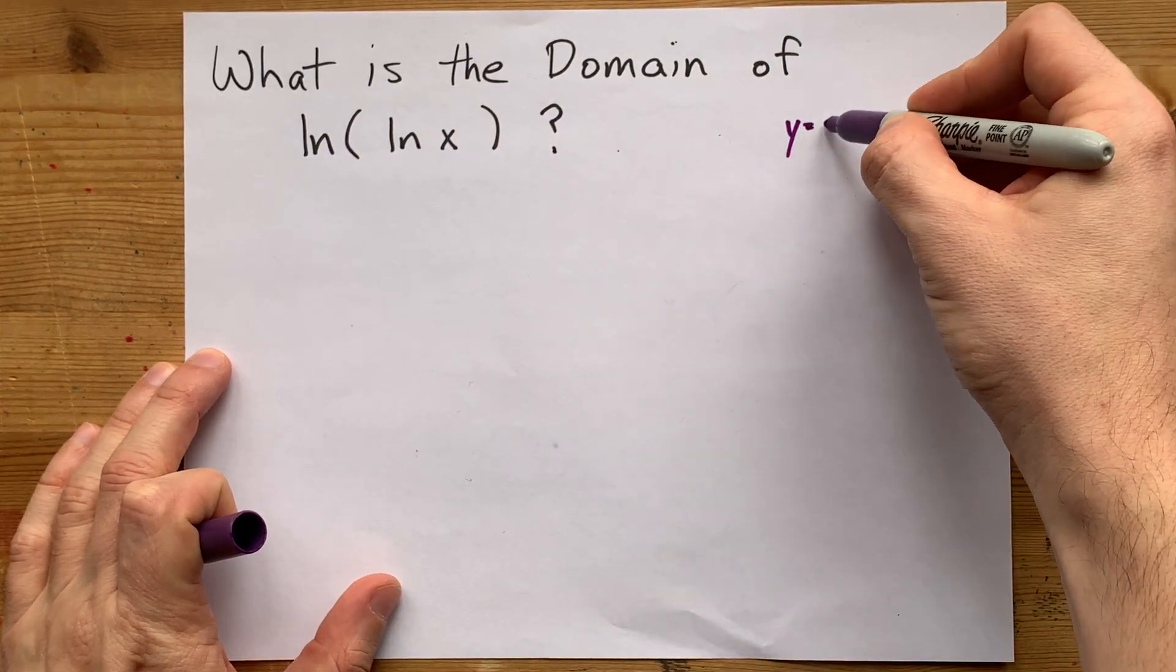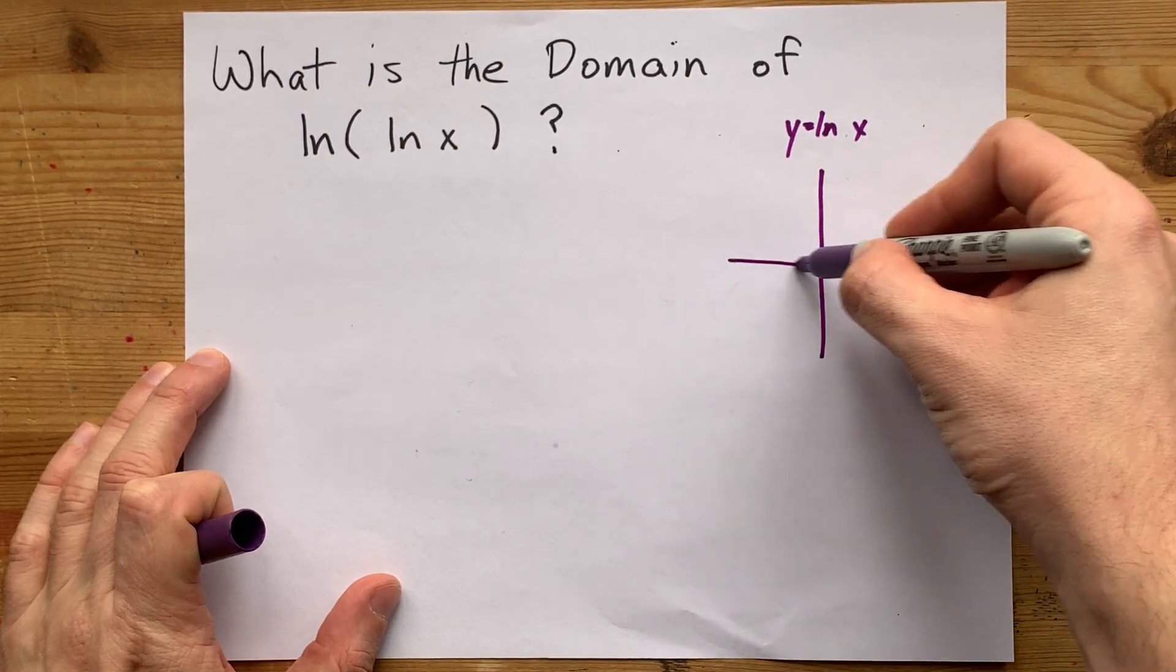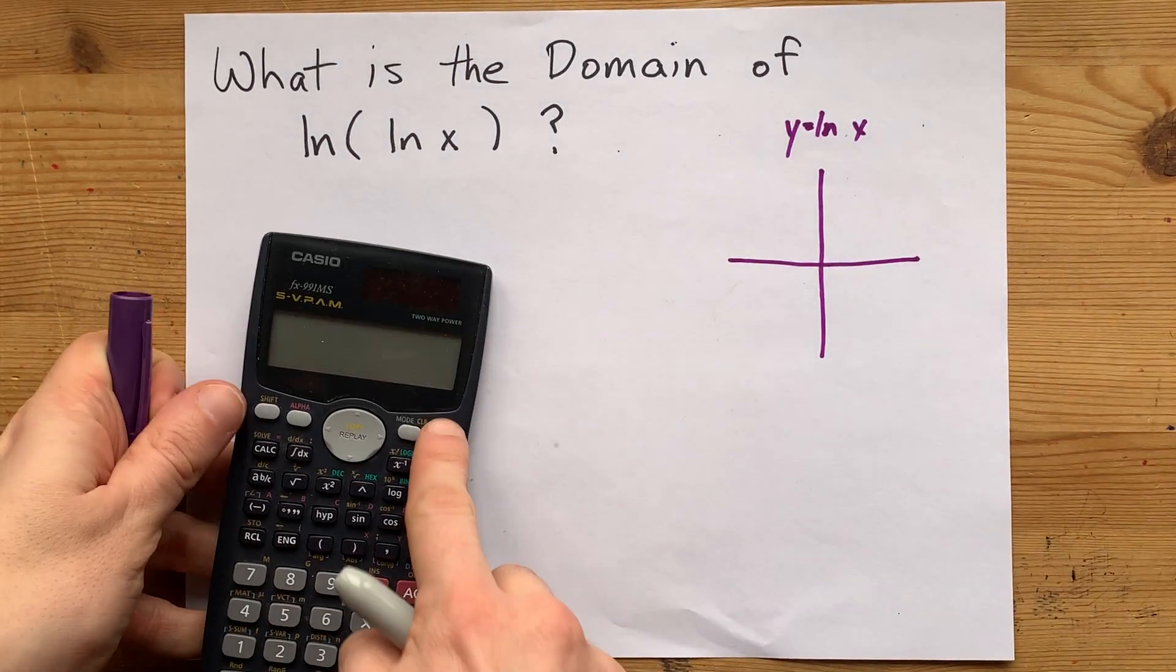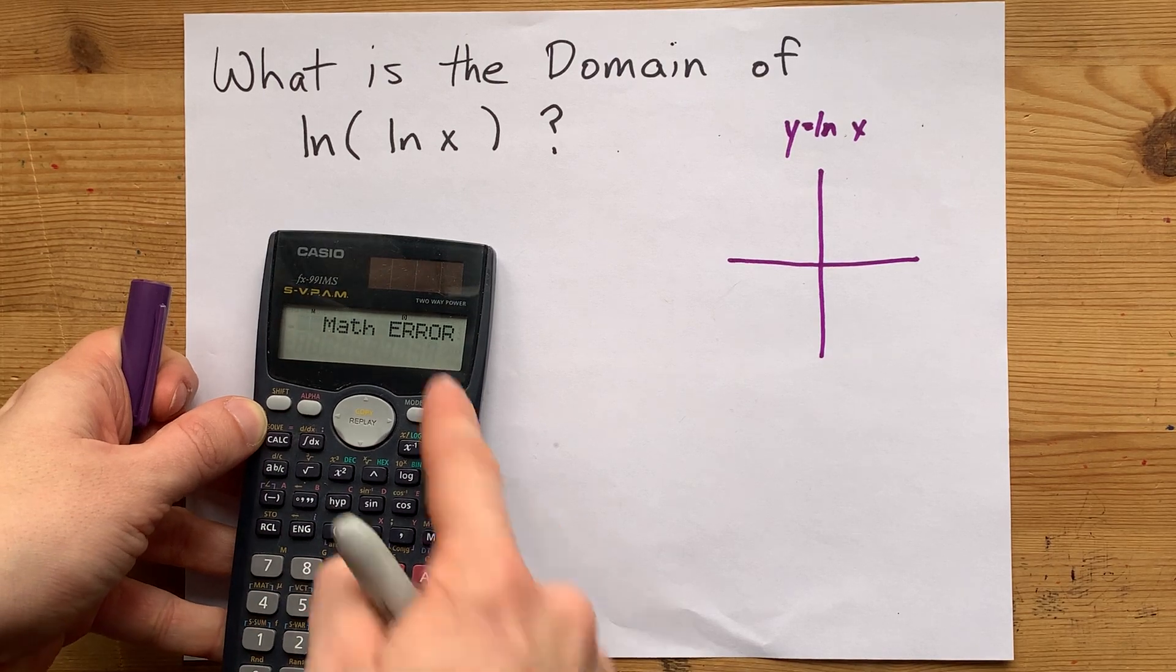Well, the first thing I want you to know is that y equals ln x is only ever defined when x is a positive number. If you try to do the ln of a negative number—I'm going to do negative 5 here—you get an error.